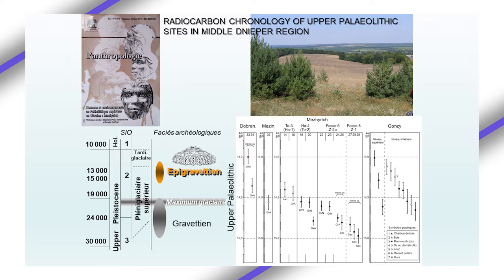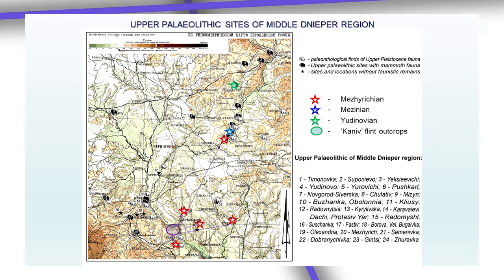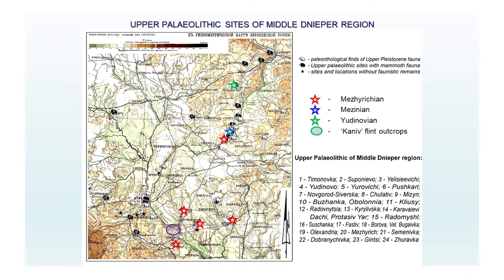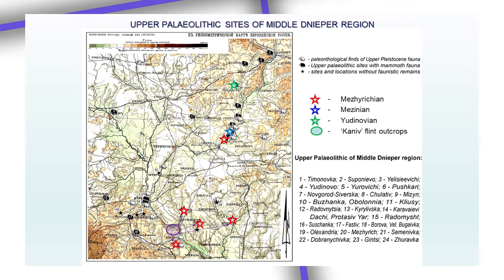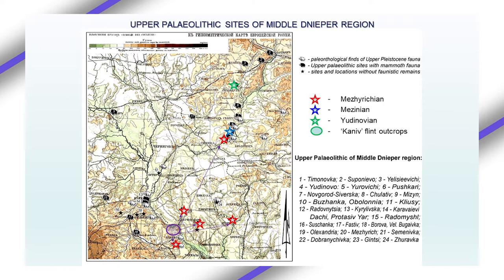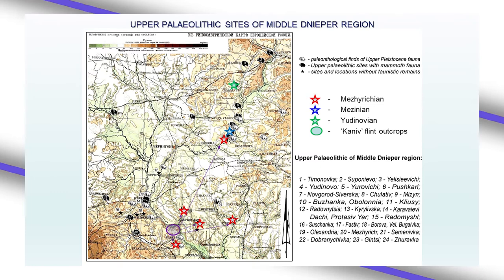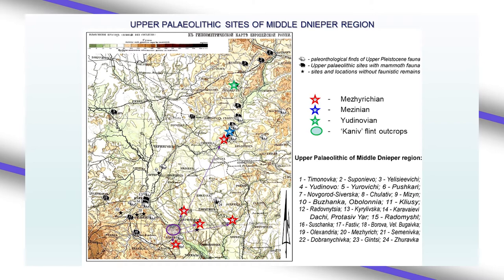The specificity of these sites can be seen in their geographical position, technology, and chronology. Today we will speak about the Mezhirichian group of sites, situated on the territory of the Middle Dnieper area and represented by such sites as Mezhirich, Dobronichevka, Gonsi, Semenivka 1, 2, and 3, and the Buzhanka site. On the map, red stars mark Mezhirichian sites, a blue star is site Mezin — which demonstrates another typology and technology of lithics — and a green star is site Yudinova on the territory of Russia.